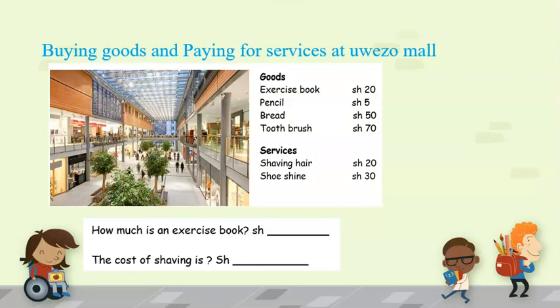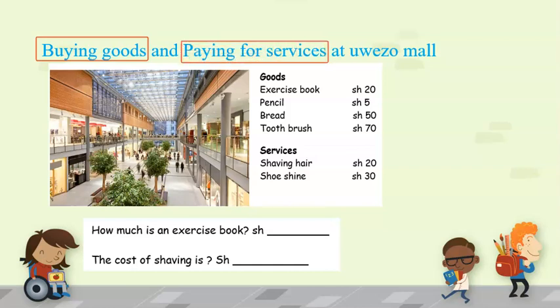Whenever we are sent by our mom and dad to the shop to bring some items, that is called buying goods. Whenever our mom sends us to the market to get our hair cut short, we pay for that service.